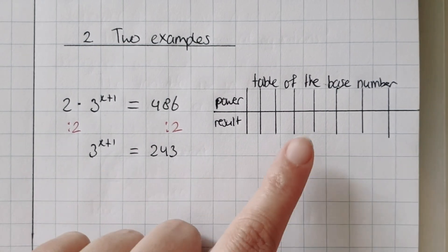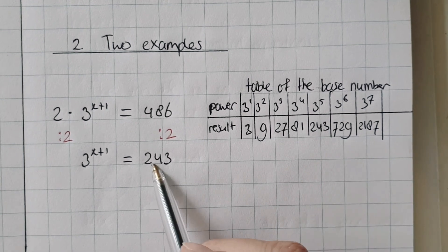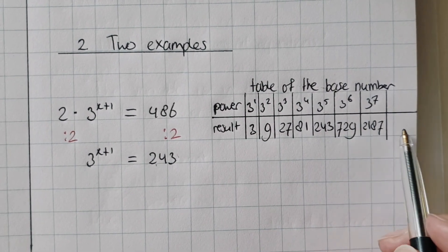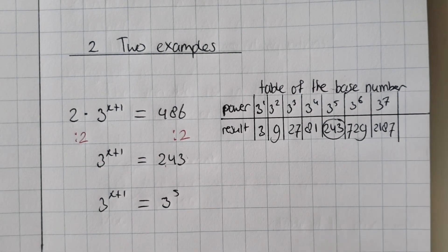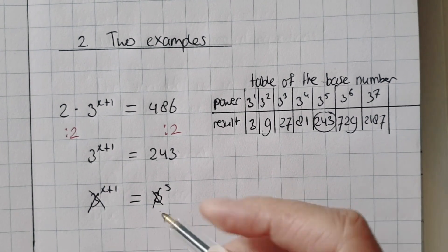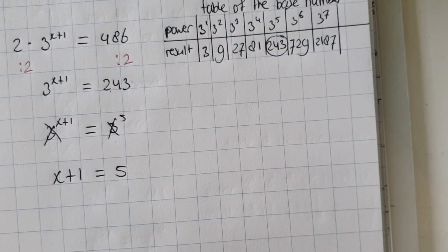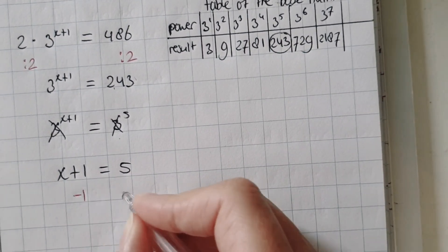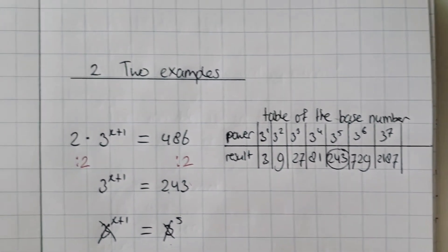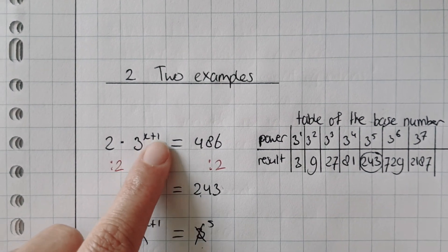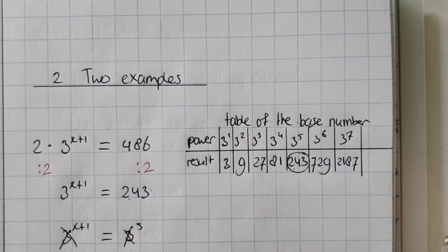Now I can make the table of the base number. The table is done, and now I can look at this number and rewrite it. I can find 243 in the table — it's here. So I'm going to rewrite it as 3 to the power of 5. This stays the same, and this is 3 to the power of 5. The base numbers are the same, so I'm going to strip away the base numbers and make a new equation, which is x plus 1 equals 5. Balance method: minus 1 on both sides, so x is 4. To verify: fill in 4, so 4 plus 1 is 5, 3 to the power of 5 is 243, times 2 is indeed 486. Done.